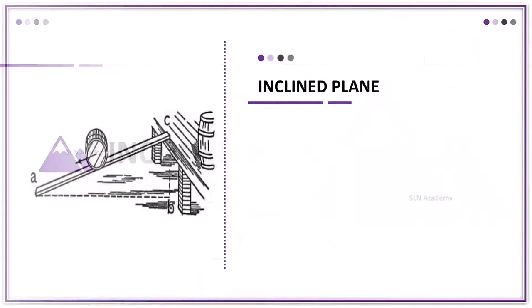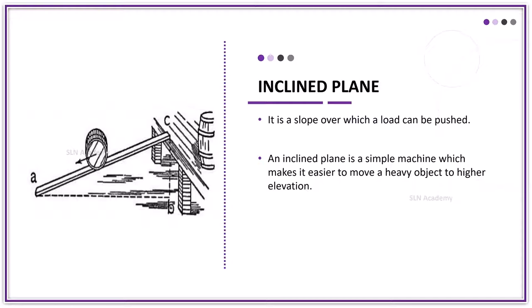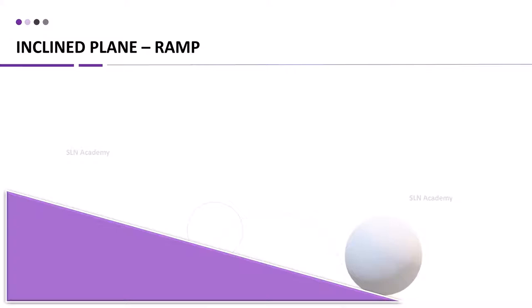Inclined plane. It is a slope over which the load or resistance works down. An inclined plane is a simple machine which makes it easier to move a heavy object to higher elevation. It reduces the amount of force needed to lift the object. Let us see how inclined plane works. It is also known as a ramp. Some effort needed to be applied upon the object and the load or resistance works down.